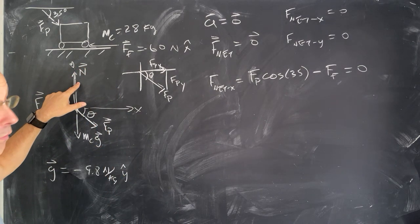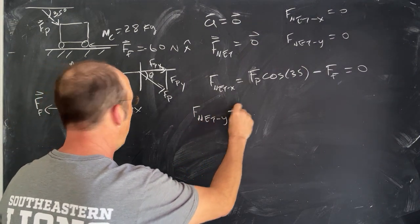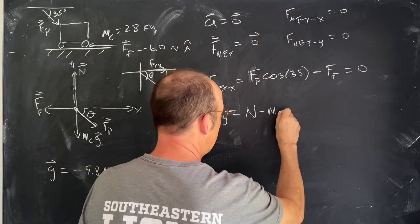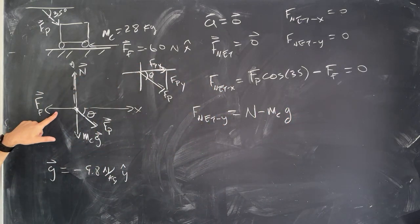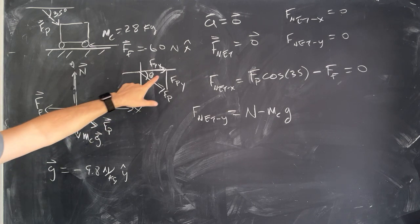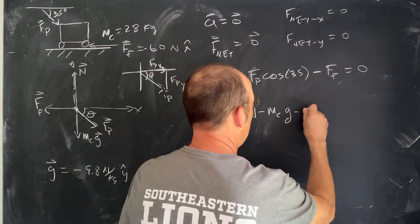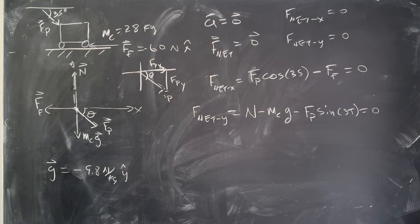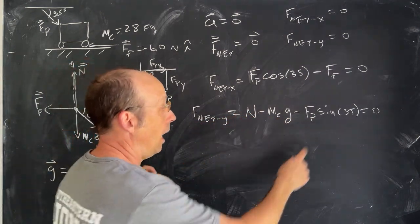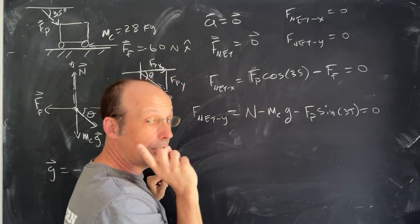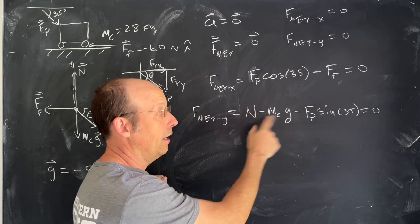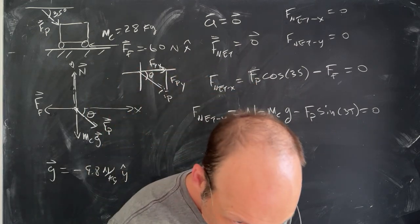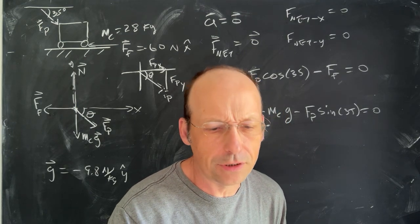Now let's write down the y equation. F-net-y: I have the normal force pushing up, all in the y direction, so that's N. The gravitational force is minus MCG, because it has a negative y component. The push force has a y component using the opposite side — that's sine — so minus Fp sine 35. And the acceleration is zero in the y direction, so those add to zero. I can't use this equation to solve for Fp because I also don't know the normal force — two unknowns. In the x equation I only have one unknown, so I'll use that one to solve for Fp. But I'll also solve for the normal force because it's fun.